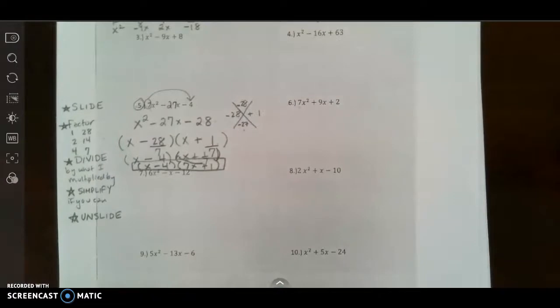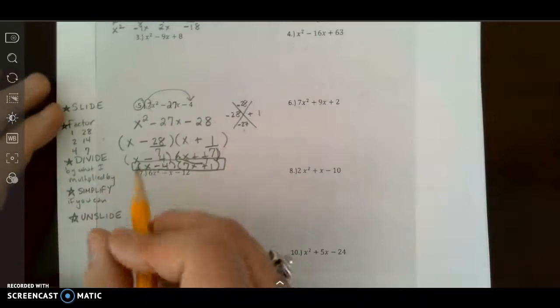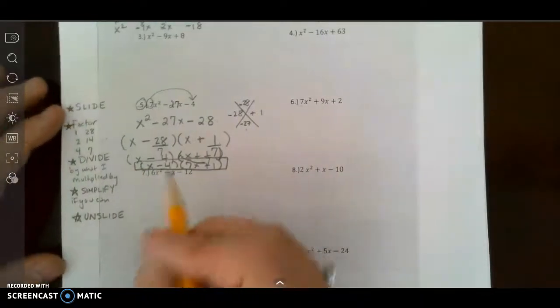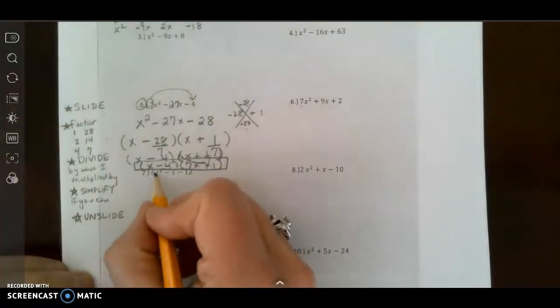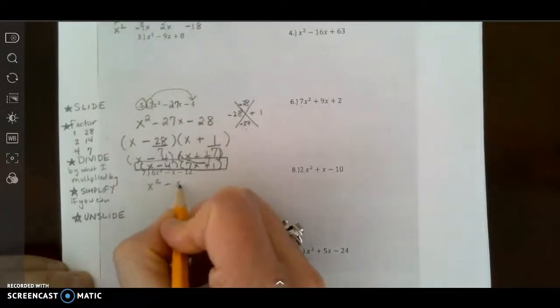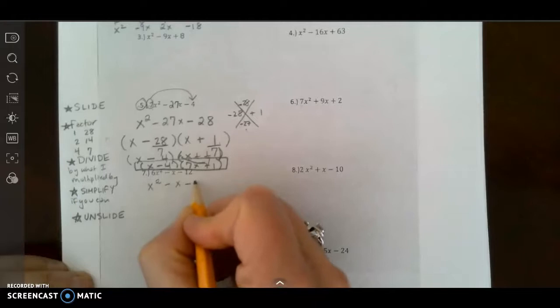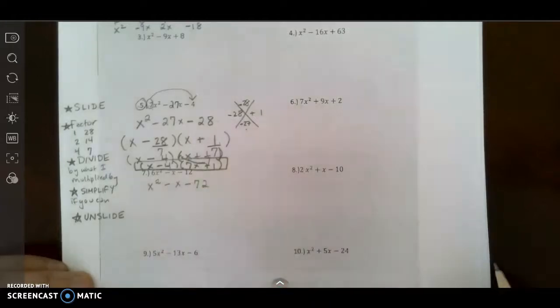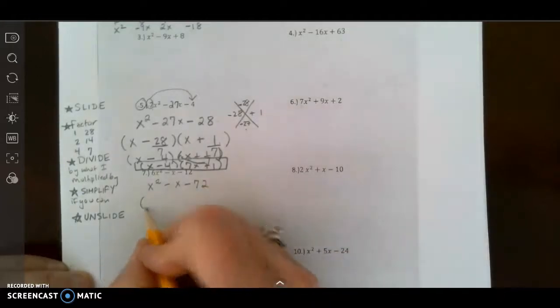Let's do one more. How about we just do number 7, the one right below it. Okay, so I'm going to start by sliding the 6. And when I do that, I get x squared minus x minus 72. Now I have to factor.